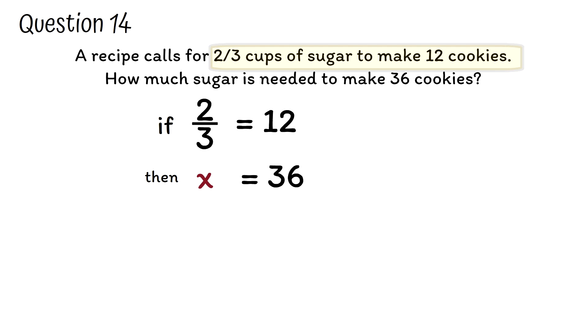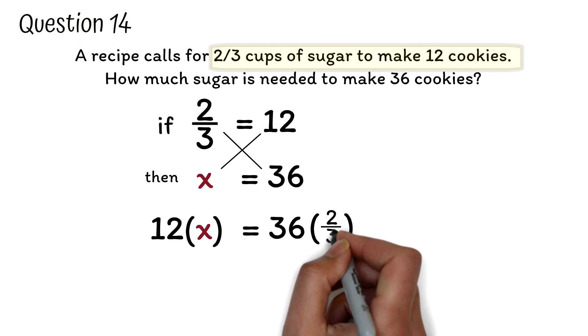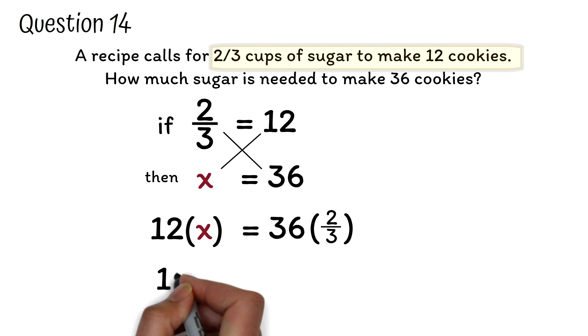After setting up, we will cross-multiply. x will multiply 12, and 36 will multiply 2/3. 12 by x is 12x. With 36 multiplied by 2 divided by 3, 3 goes into itself once but into 36, 12 times. This leaves us with 12 times 2, which is 24.